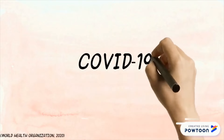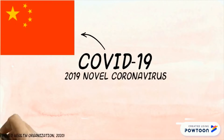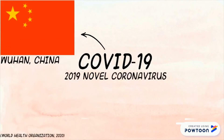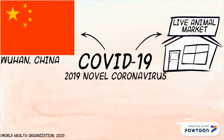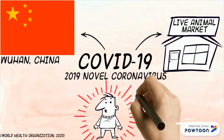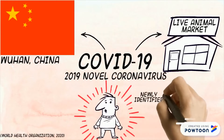COVID-19 is the novel coronavirus that emerged in Wuhan, China during late 2019. It is most likely from an unidentified animal in the live animal markets. A novel coronavirus means that the strain of coronavirus has not been previously identified in humans.